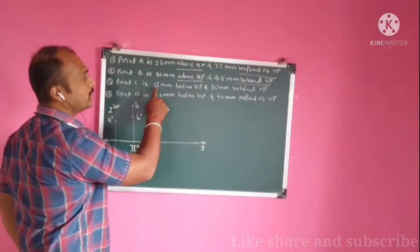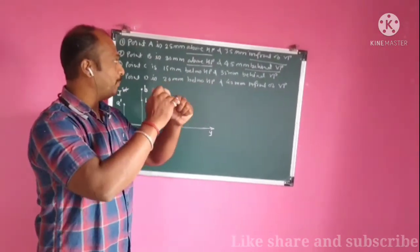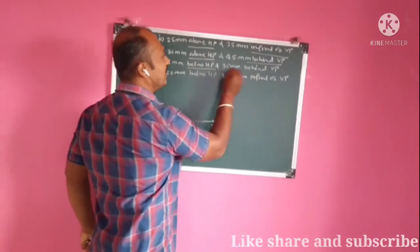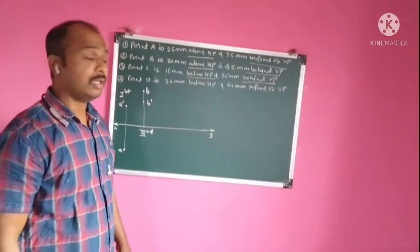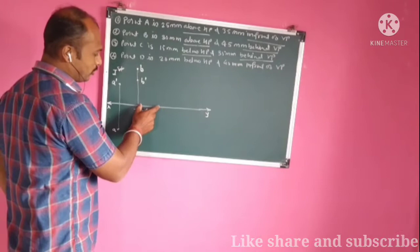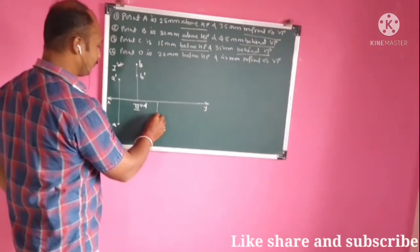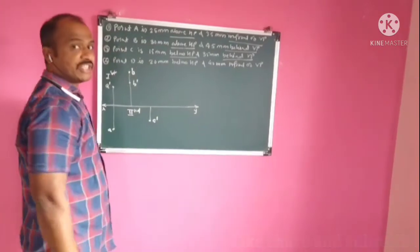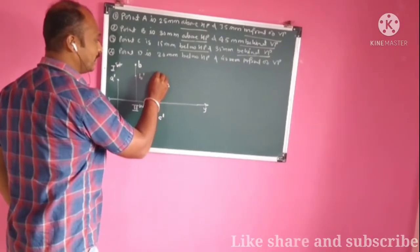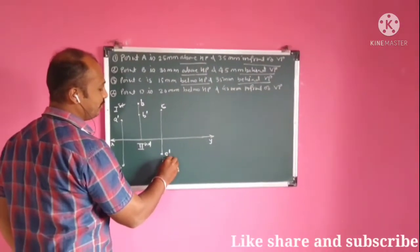For point C, it is 15 mm below HP and 35 mm behind VP. This means the point lies in the third quadrant. Since the point is below HP, its front view will be 15 mm below XY line — mark this as C dash. Since the point is 35 mm behind VP, its top view will be above XY line. Plot 35 mm above XY line — that is the top view of point C.